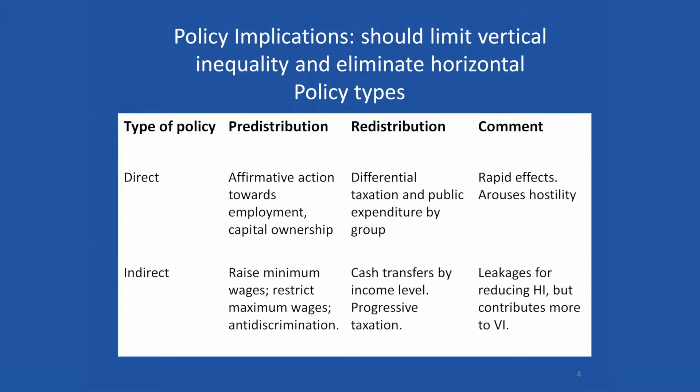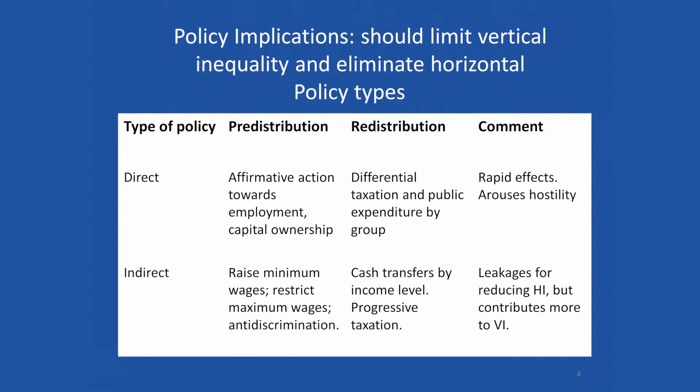Direct and indirect policies. Direct policies are policies in which you take certain groups and target them for certain scholarships — like affirmative action — which you can do in relation to class, income group, race, and so on. Indirect policies are policies which get at the same thing, but you don't actually target groups.